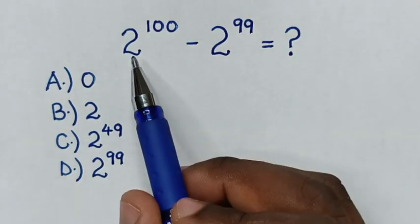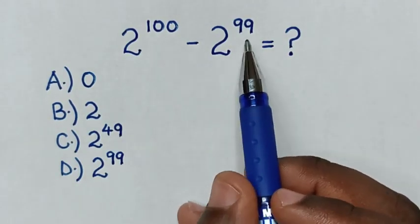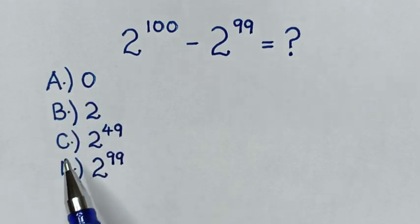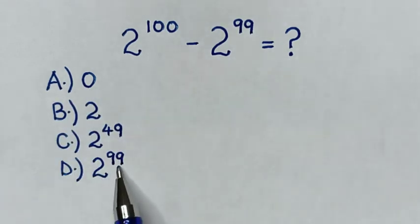Hello, how to solve 2^100 minus 2^99? The answer choices are: A) 0, B) 2, C) 2^49, D) 2^99.